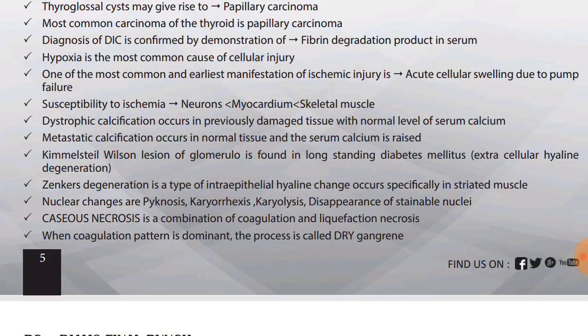Hypoxia is the most common cause of cellular injury. One of the most common and earliest manifestations of ischemic injury is acute cellular swelling due to pump failure. Susceptibility to ischemia: least susceptible is skeletal muscle, then myocardium, and most susceptible is neurons. So ischemia most susceptible is neurons, and least is skeletal muscle.